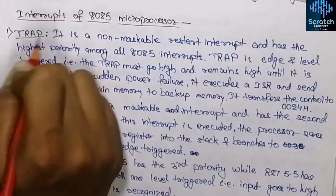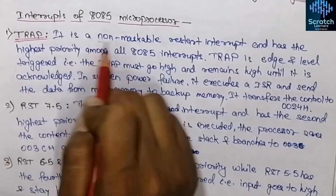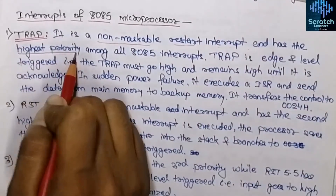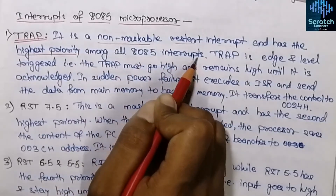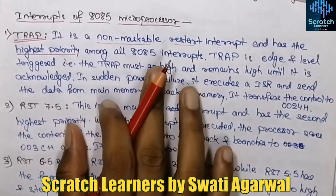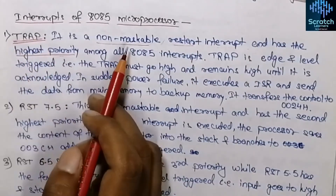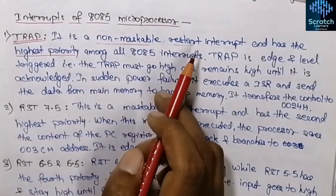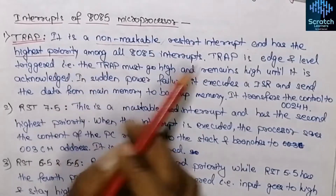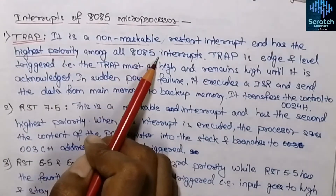Now let's discuss the interrupt signals in the 8085 microprocessor: TRAP, RST 7.5, RST 6.5, RST 5.5, and INTR. The first one is TRAP. TRAP is a non-maskable restart interrupt and has the highest priority among all 8085 interrupts. It is called a restart interrupt because the TRAP interrupt can only be cleared by resetting the microprocessor.